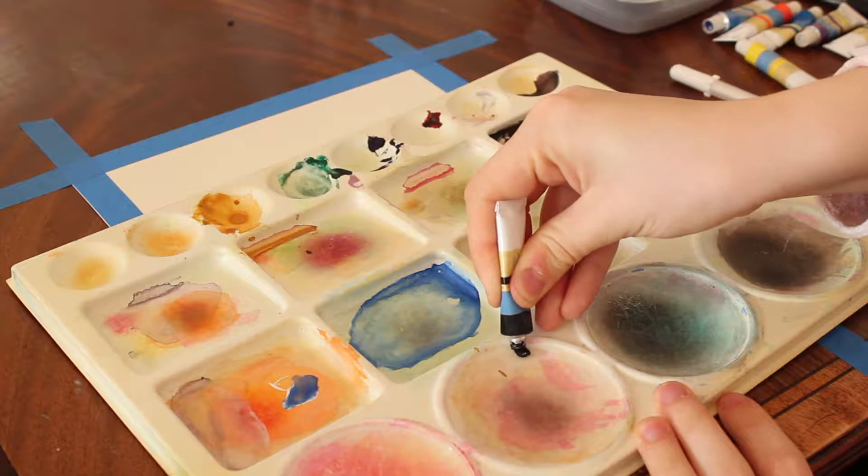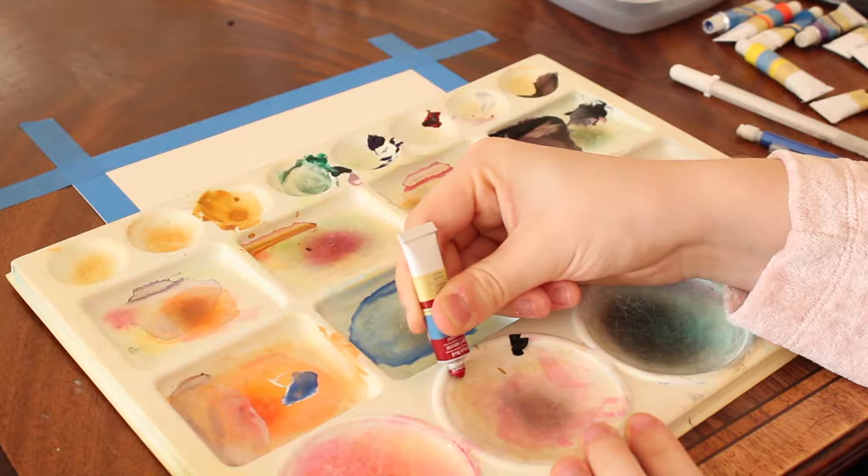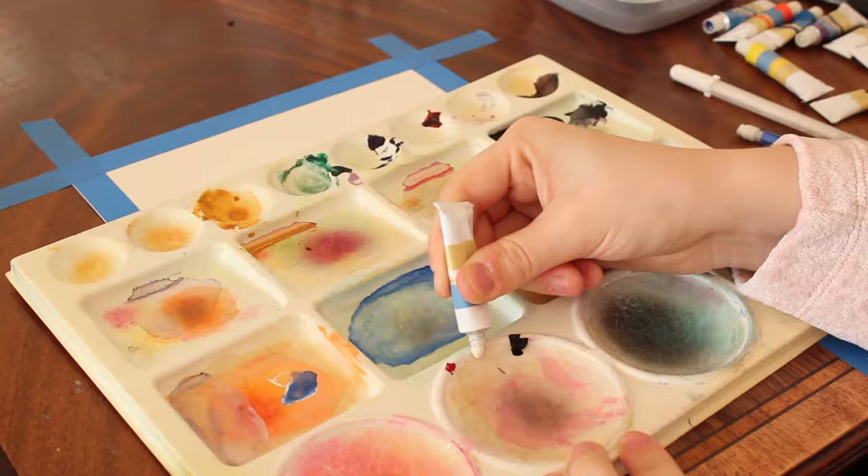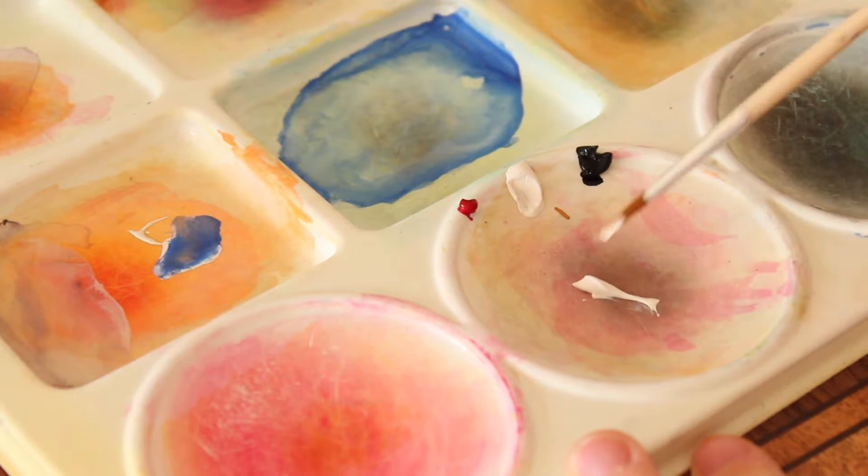Take a small bit of black—I did way too much but you'll need the black later anyway—a tiny bit of crimson red and white. You can use any type of watercolors but I prefer the tube types.